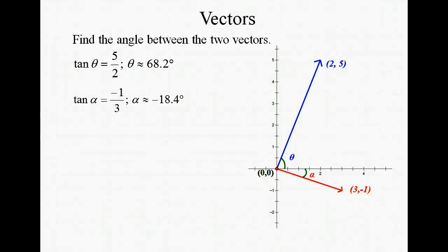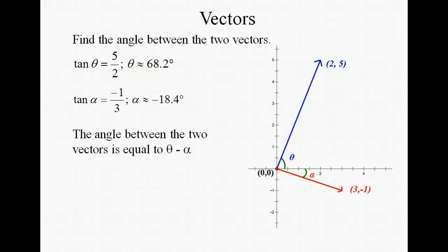Now, since one of our angles is negative, we're going to subtract the two angles. And when we do that, we get about 86.6 degrees for the angle between the two vectors.